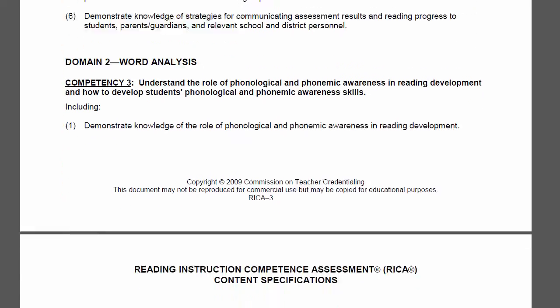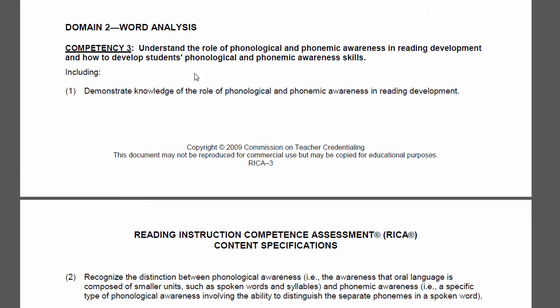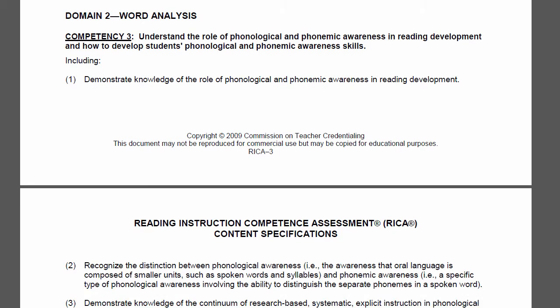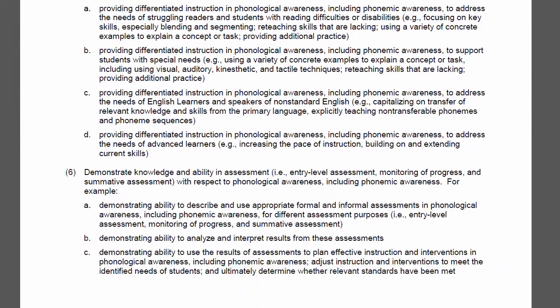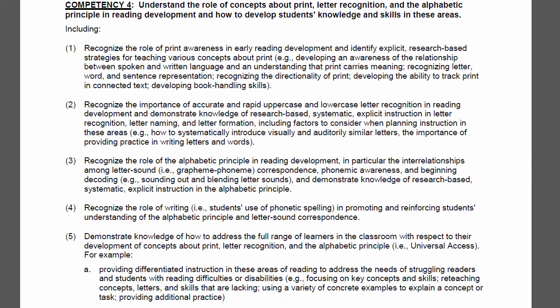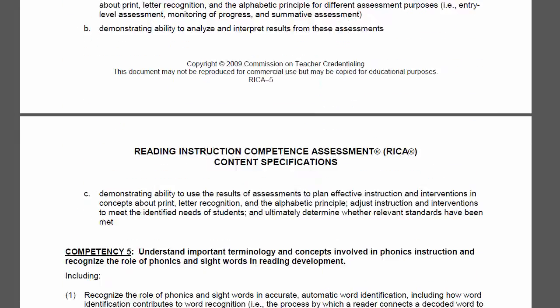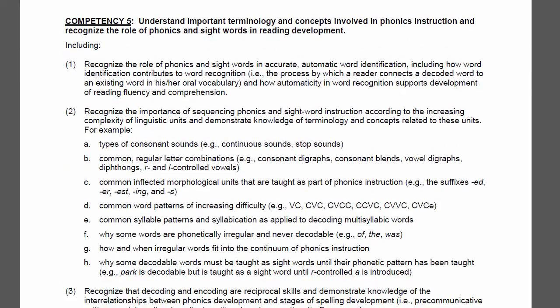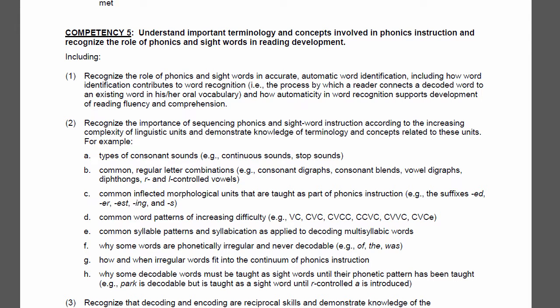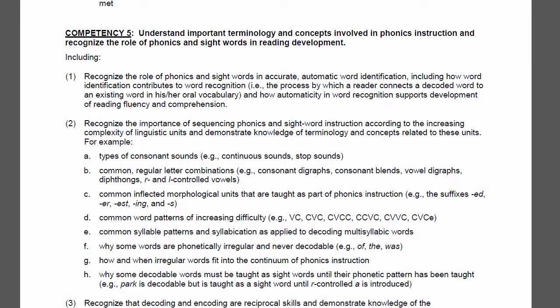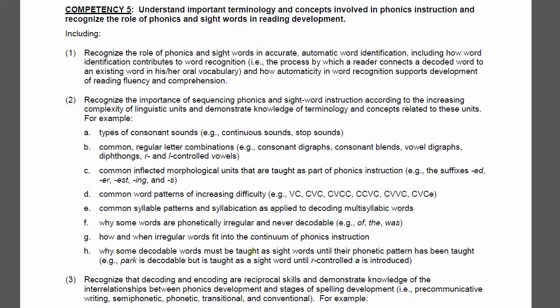Scrolling through to domain two — word analysis — notice they've got a number of competencies in here too. About a third of the test is coming from word analysis; they really want to make sure that students understand how to do early literacy. Competency three is phonemic awareness, competency four is about concepts about print, and competency five has sight words and phonics together.